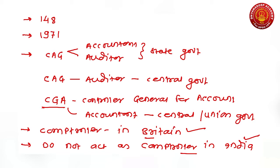An important line for examination: CAG is also the external auditor of government-owned companies. All procedures and functioning of the CAG are mentioned in Part Five of the Indian Constitution.